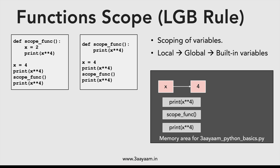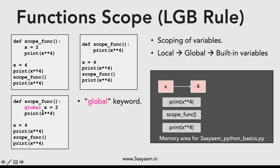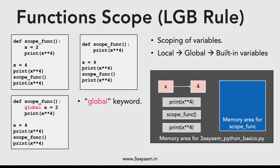Now I want to extend the scope of a variable beyond the function itself — meaning any changes made inside the function should be visible outside too. We can do that using the global keyword. Using global x inside the function means x inside the function points to the same memory location as the global x (which holds 4), rather than creating a new temporary memory location inside the function.